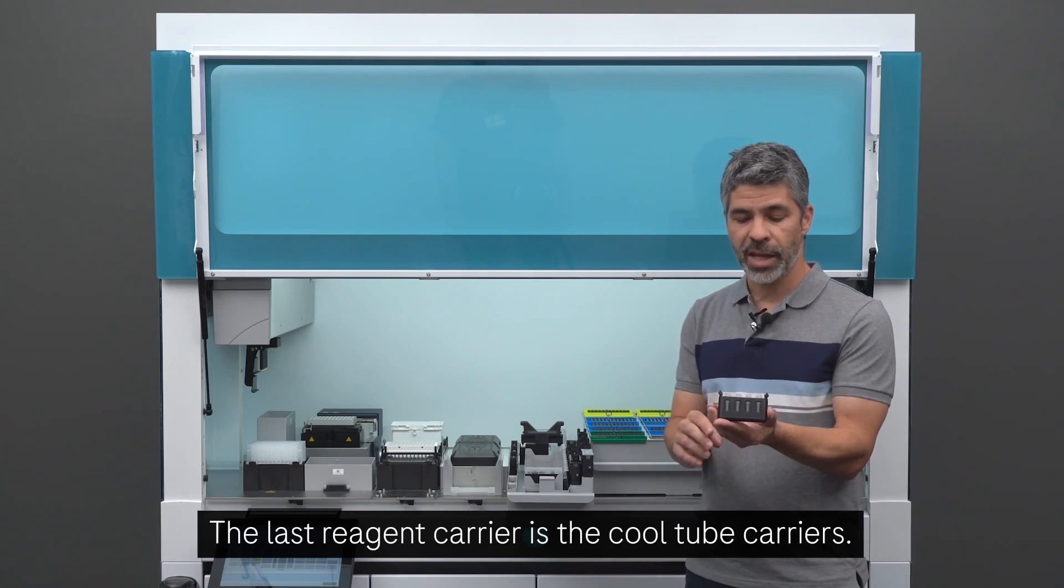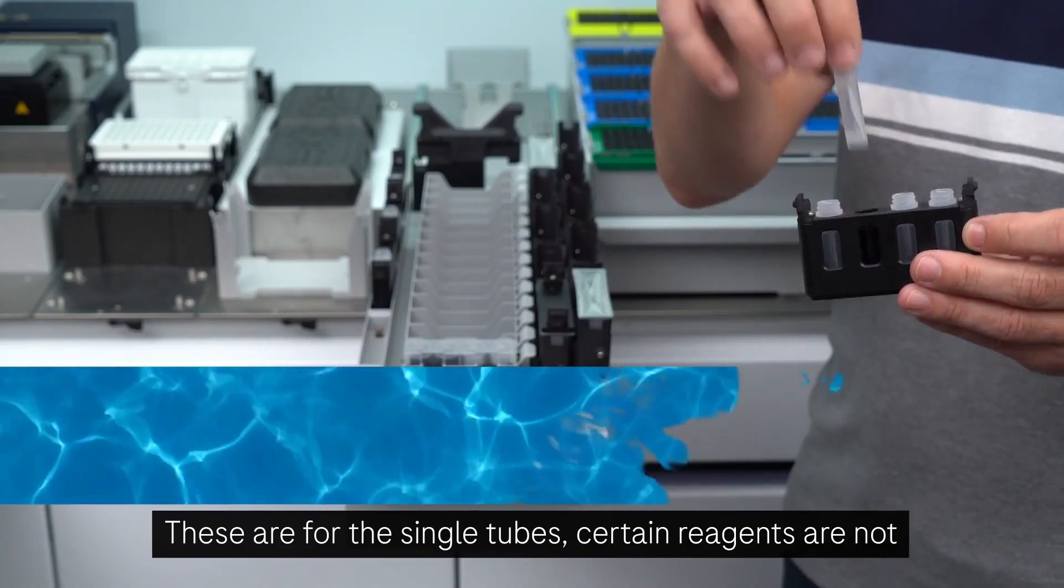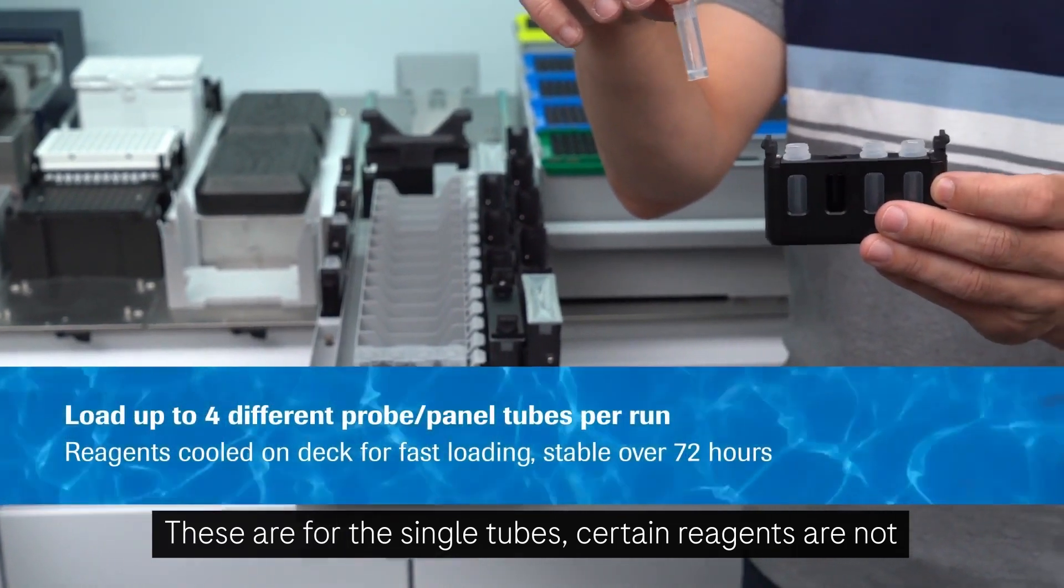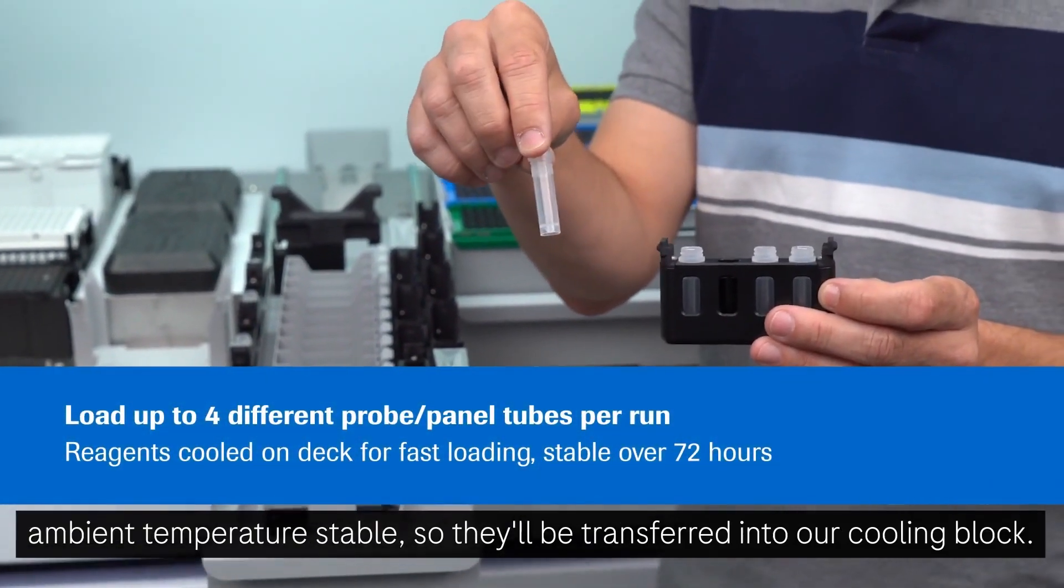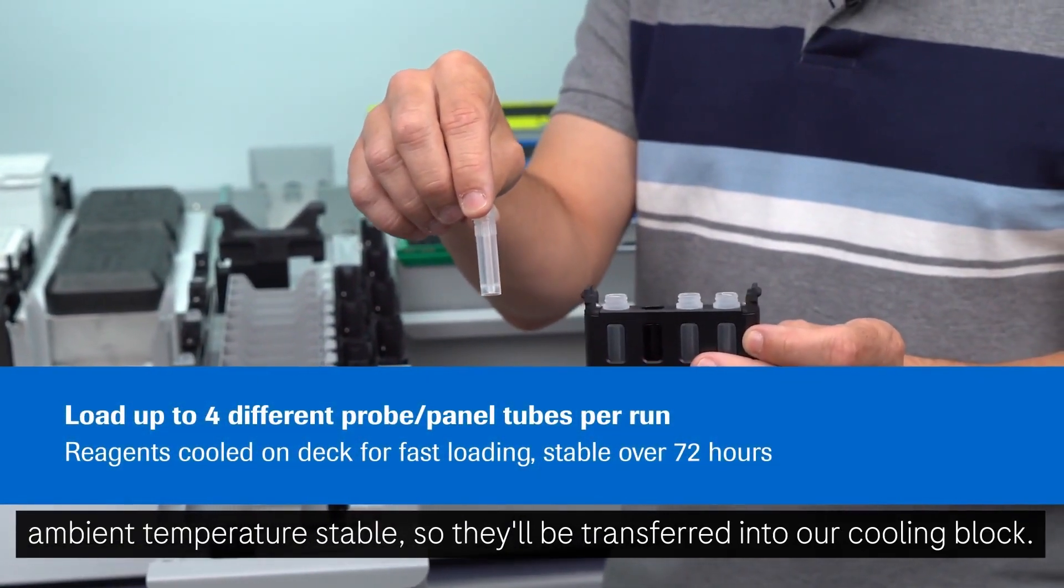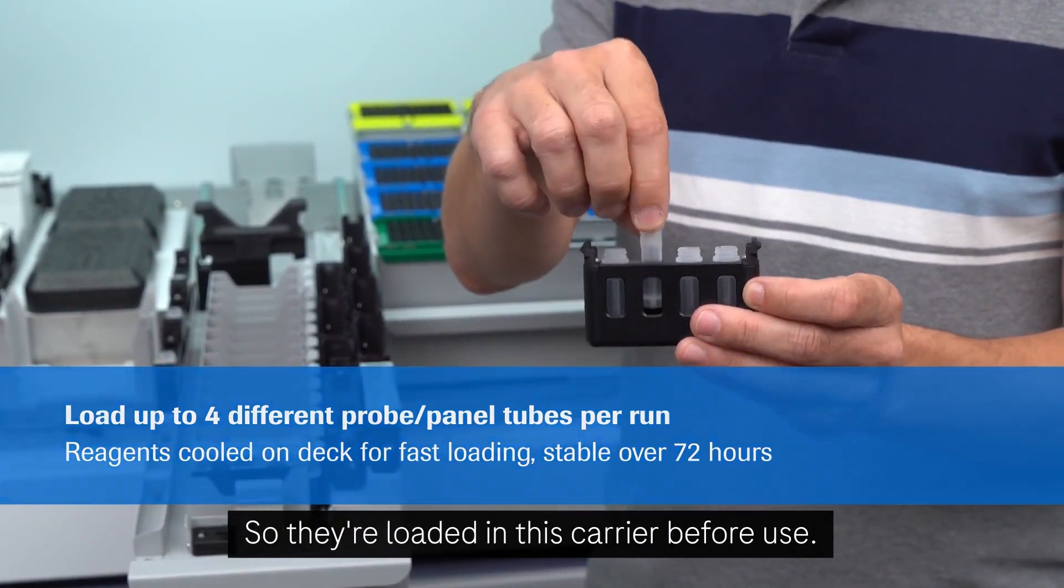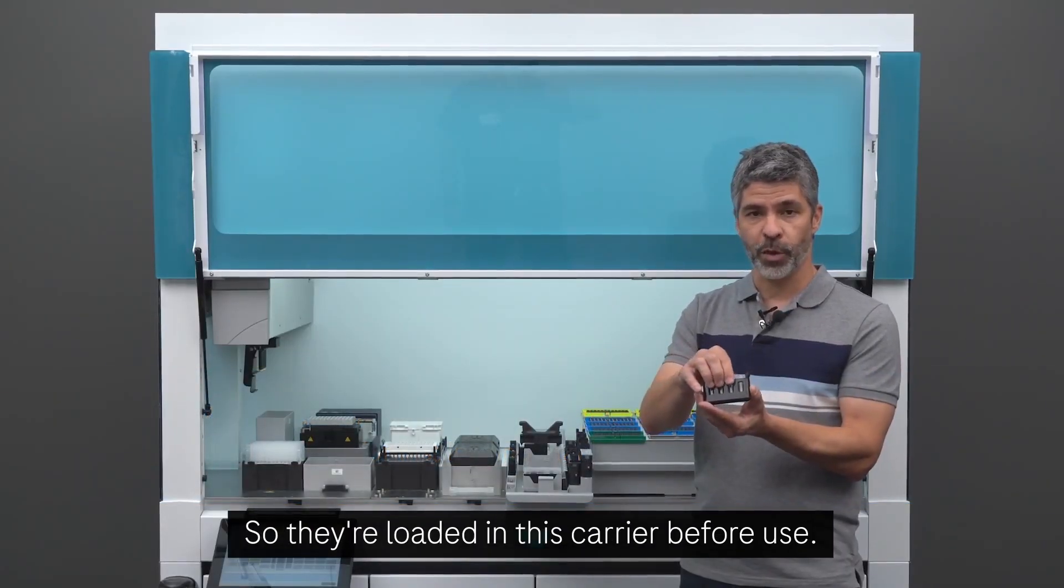The last reagent carrier is the cool tube carriers. These are for the single tubes. Certain reagents are not ambient temperature stable, so they'll be transferred into our cooling block. So they're loaded in this carrier before use.